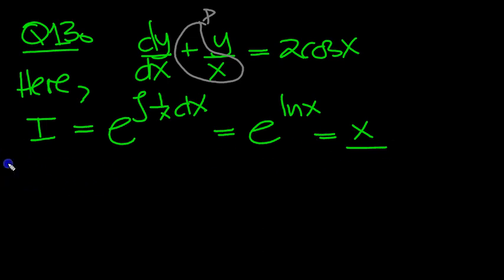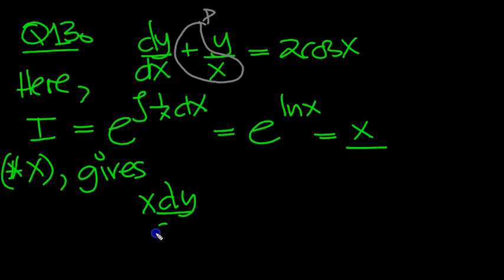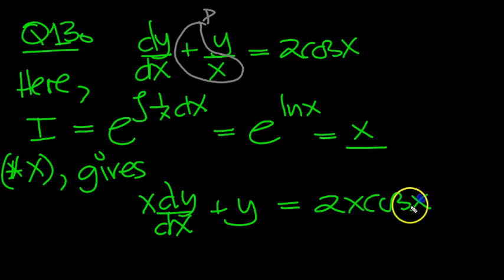So multiplying the equation by x gives: x dy/dx plus the x's cancel, we'll just be left with y here. This is equal to 2x cos(x).